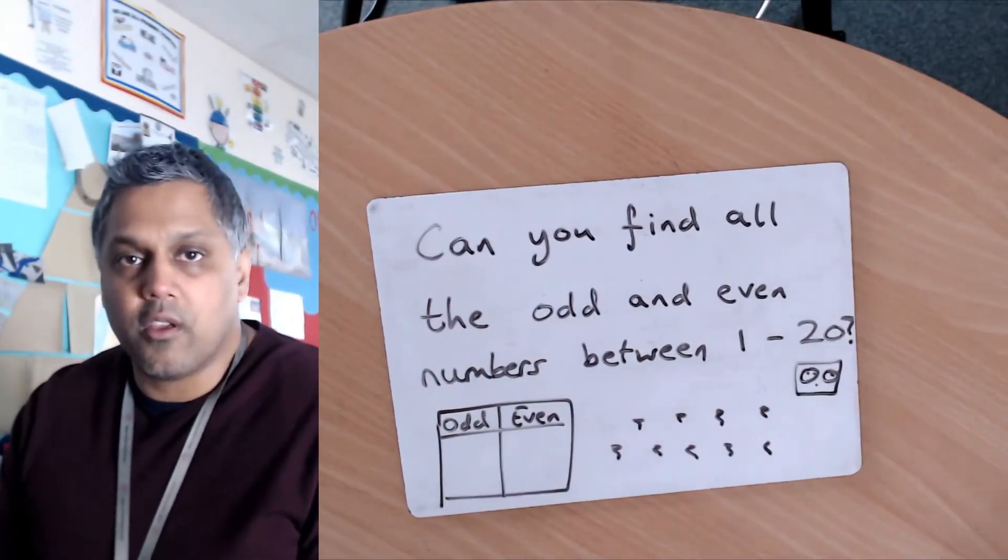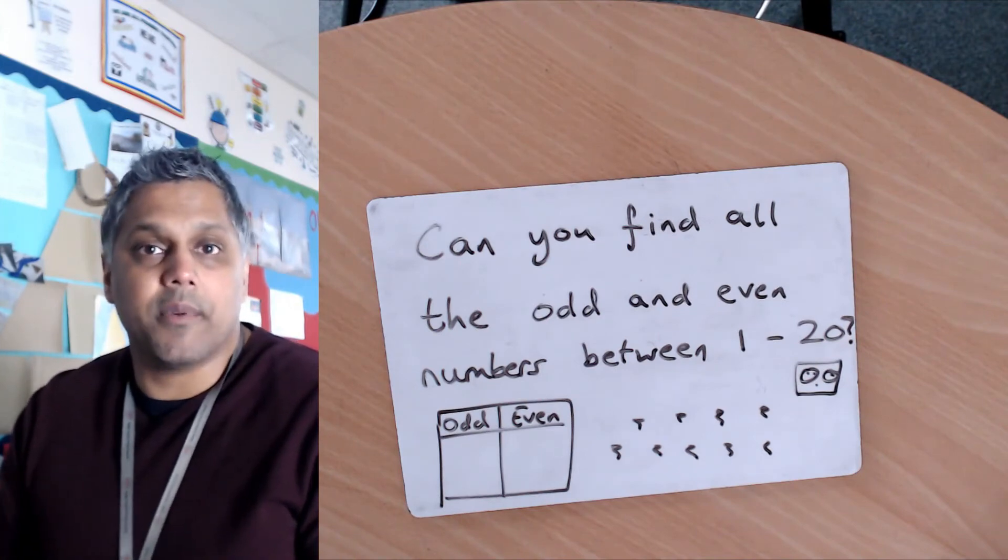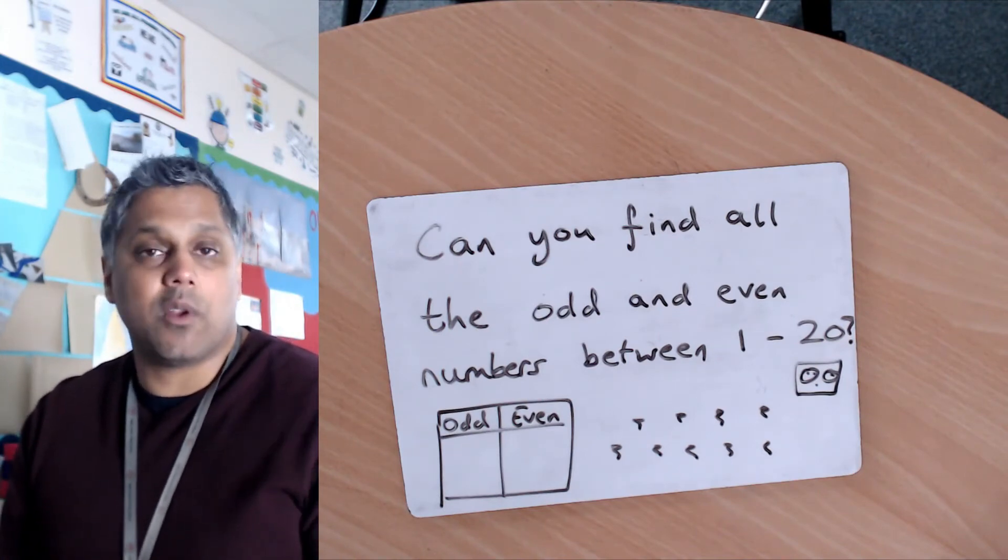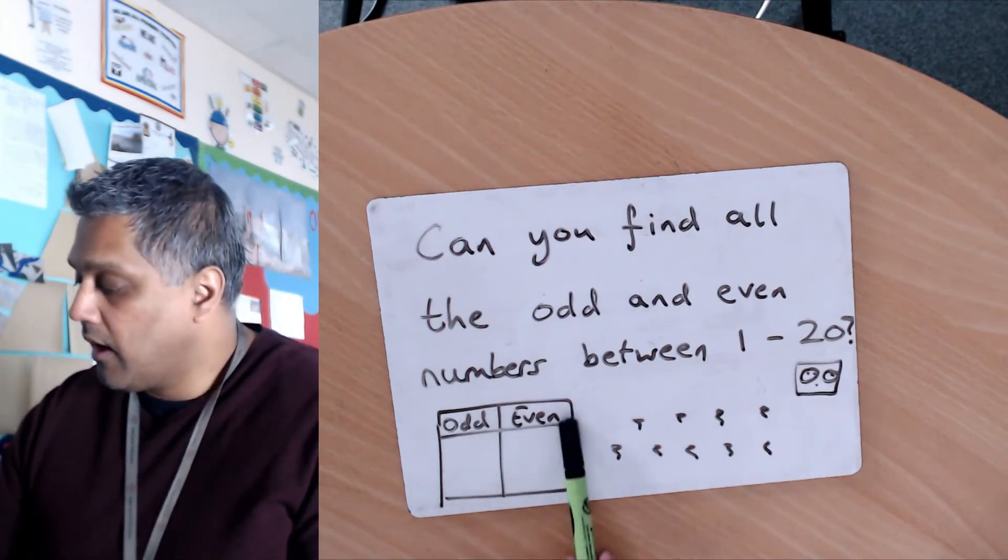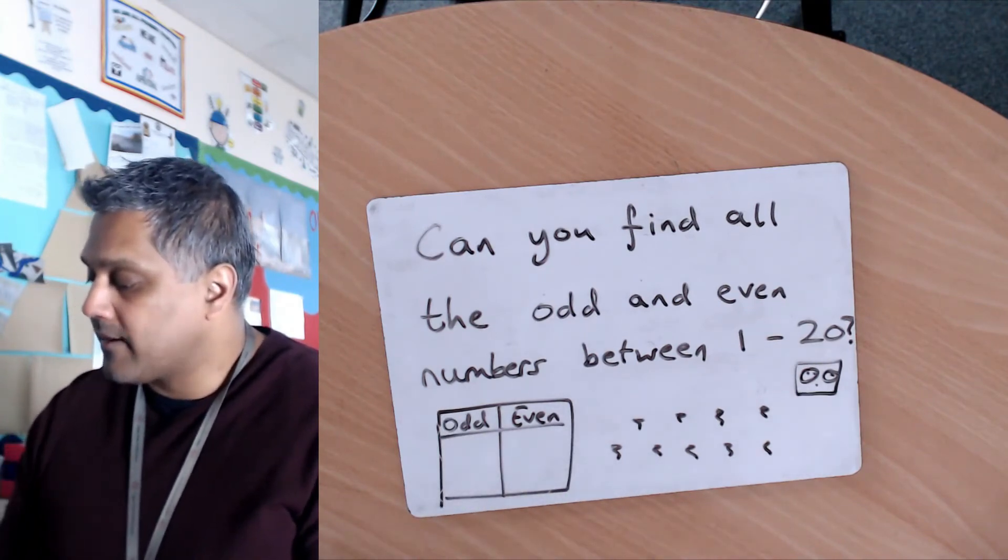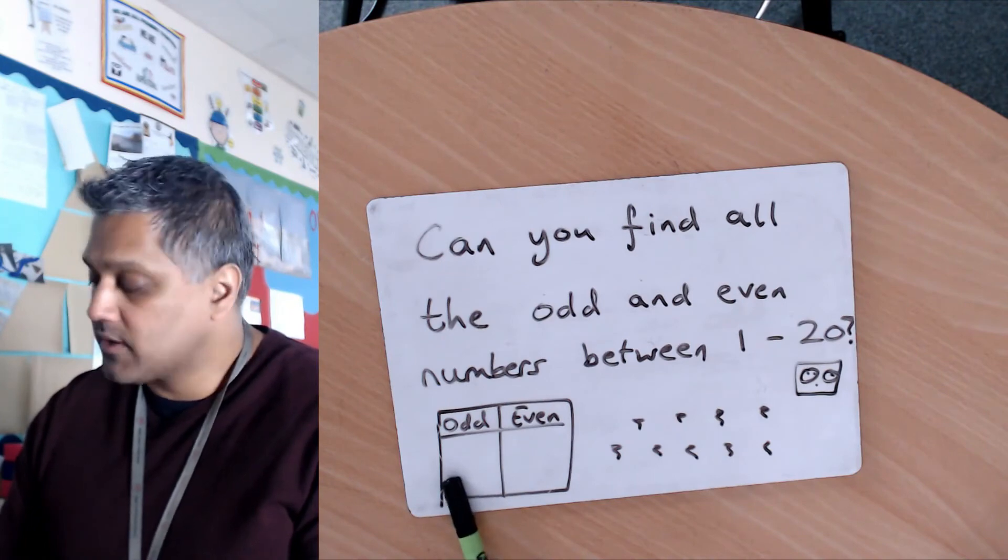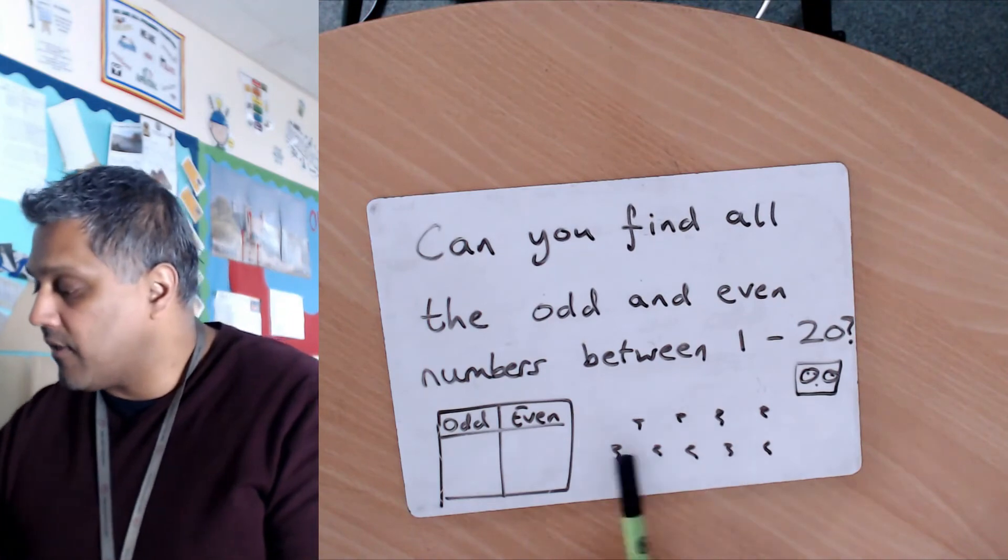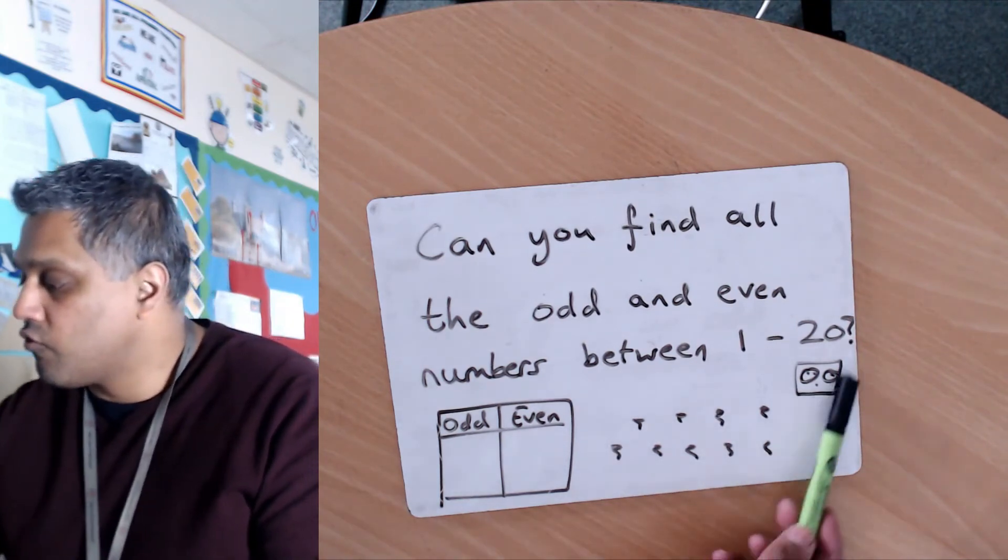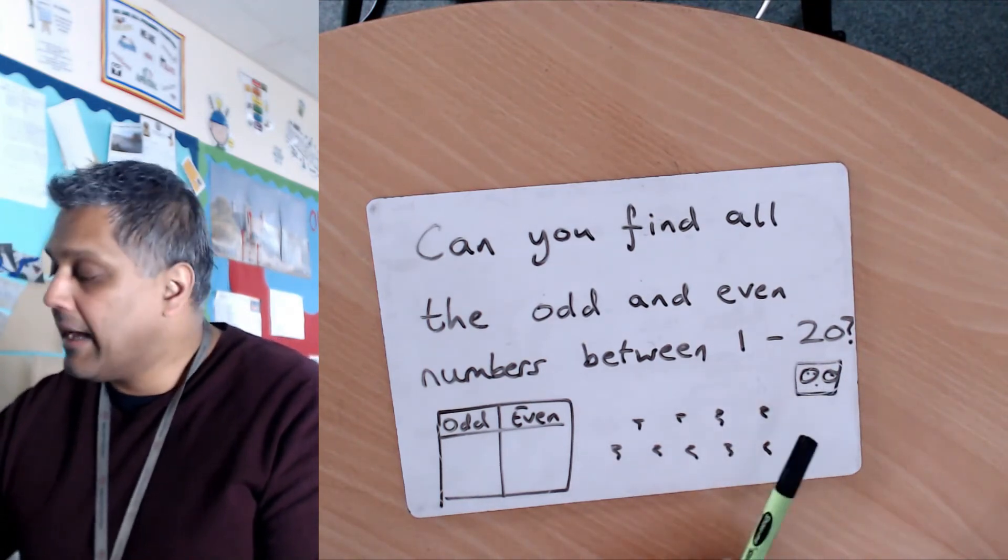So here's a little challenge for you. Can you find all the odd and even numbers from 1 to 20, between 1 and 20? And you can represent them as you like. You can either draw a little table here and write all the odd numbers on one side and all the even on the other side. You can draw a number line and put the odds underneath and the evens on top. You can draw your numbers and show me how you shared them to find out if they're odd or even.